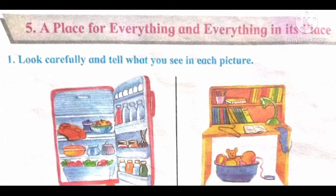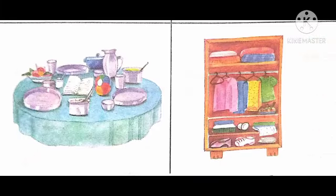What you see on the table, near the table, under the table? On the table: lamp, book, hanger and socks. In the basket: toys. In the rack: books, notebooks and pen pencils.